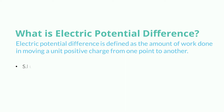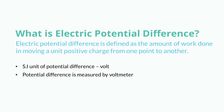The SI unit of Potential Difference is Volt. Potential Difference is measured by a Voltmeter.